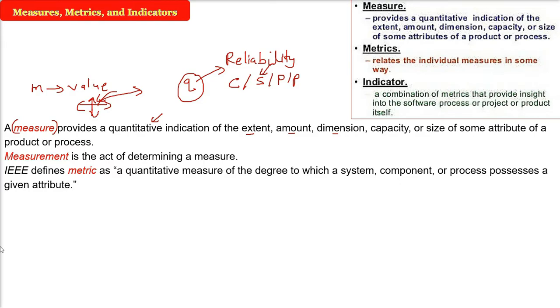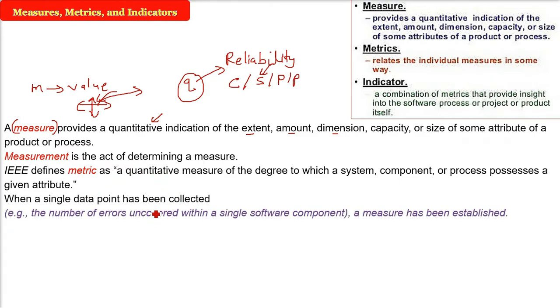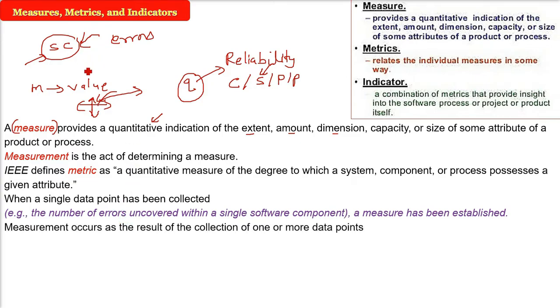So this metric relates the individual measure in some way. When we are collecting a single data point, let me take an example of a software component. Now we need to test it. There are certain errors will be uncovered. So when we take a number in a single software component, these numbers of error has come. We have established a measure.